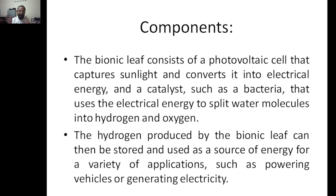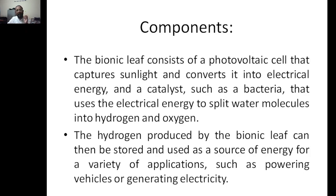Now the components: there are several components in the bionic leaf. First, a photovoltaic cell is needed to convert sunlight into electrical energy. Second, you need a catalyst — for example, it can be a bacteria or an enzyme. We saw in the previous module that enzymes act as catalysts, so either an enzyme or bacteria can be used to facilitate the reaction.